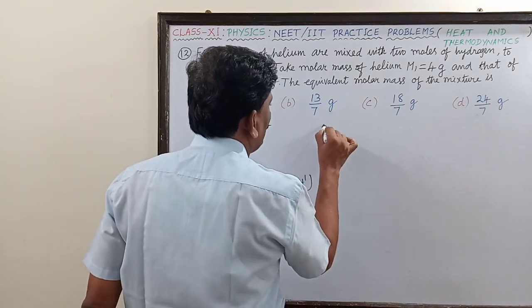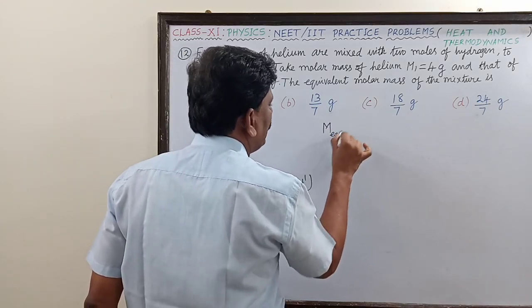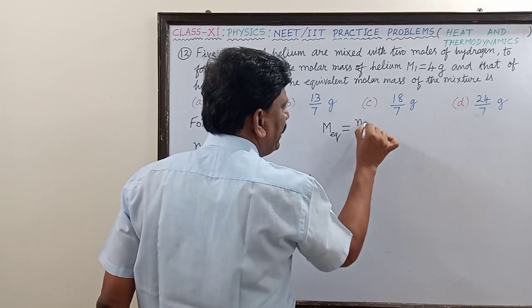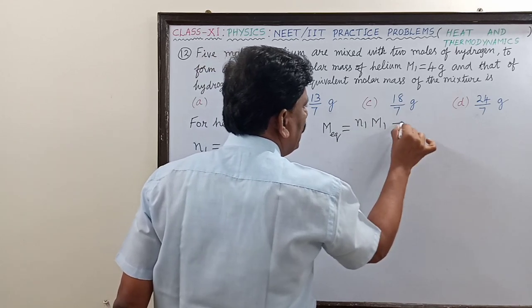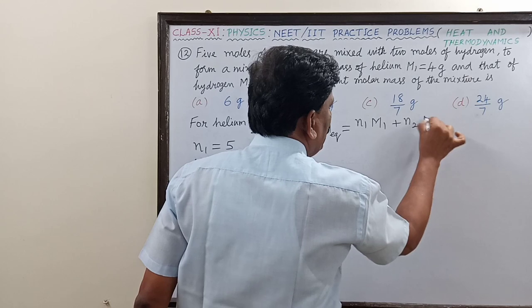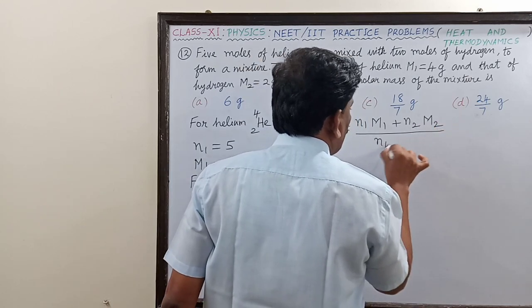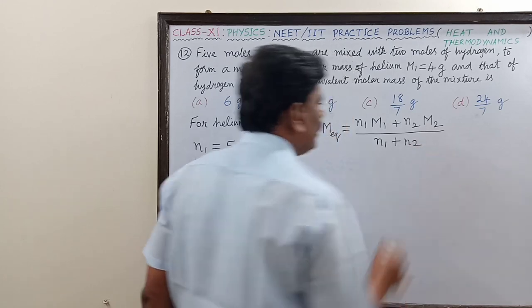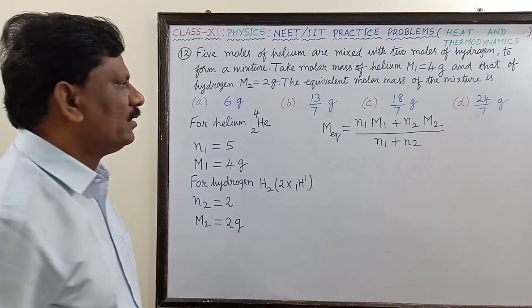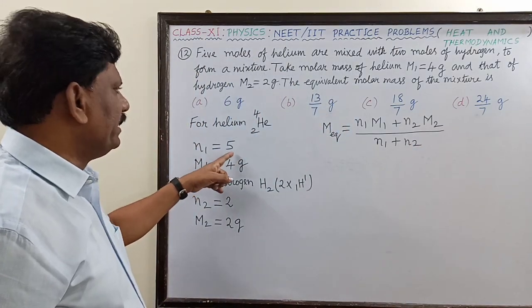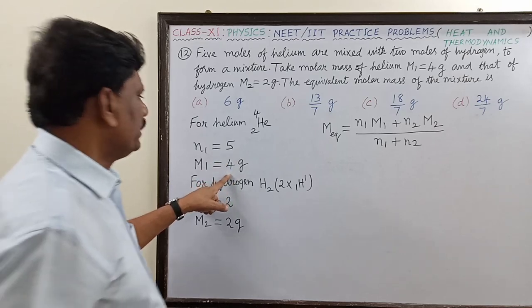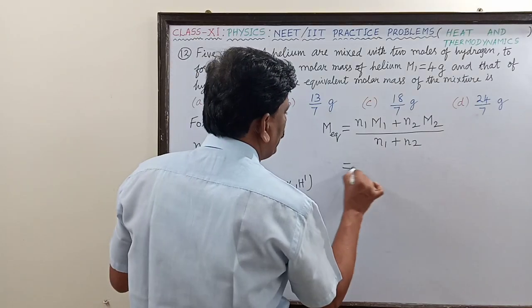So what is the equivalent molar mass? Equivalent molar mass M-equivalent is equal to N1 into M1 plus N2 into M2, divided by the total number of moles, N1 plus N2.